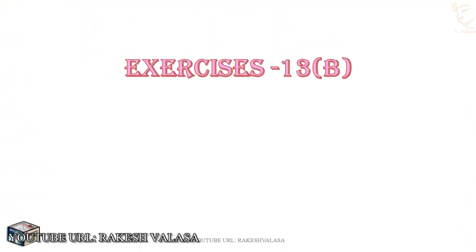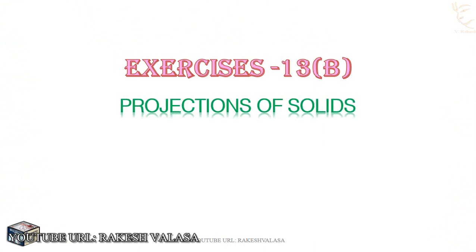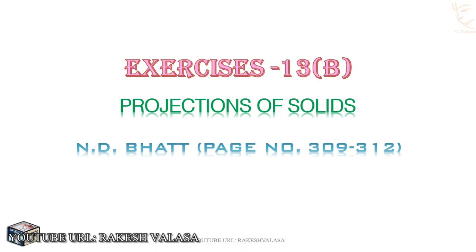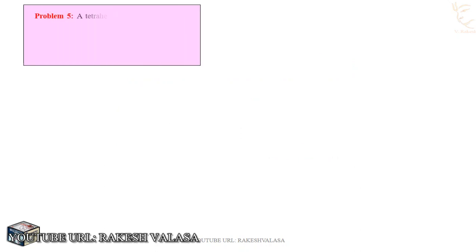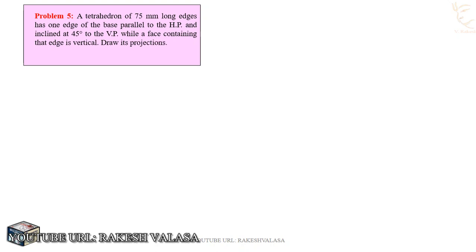In this video lecture, I am going to explain one problem on Projections of Solids 2. I have taken this problem from Engineering Drawing by Andeba textbook, Exercises 13B, Projections of Solids 2, page number 309 to 312. Here I have taken problem number 5: A tetrahedron of 75mm long edges has one edge of the base parallel to the HP and inclined at 45 degrees to the VP, while a face containing that edge is vertical. Draw its projections.